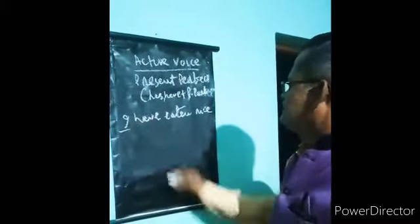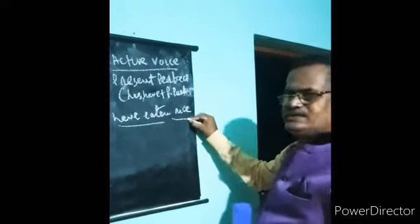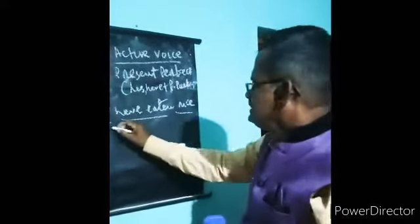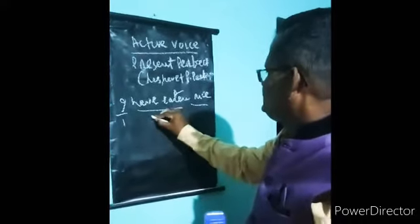I the subject, have eaten the verb phrase, rice is the object. So this is your one, this is two, this is three.